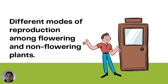Vegetative propagation is an asexual reproduction in plants using different parts like stem, roots, and leaves to produce new plants. Asexual reproduction does not involve the use of seeds to propagate. This lesson will give you an understanding of the different modes of reproduction among flowering and non-flowering plants, and will help you identify the different parts that can be used to produce new plants aside from seeds.